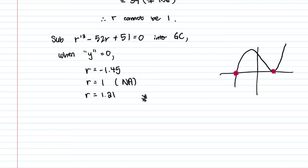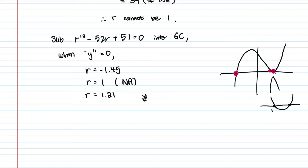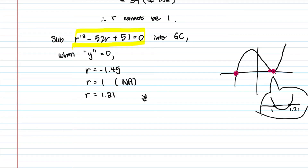The reason r=1 still appears is because it is a root, but the question states it does not exist as a valid ratio, so we reject it. If you zoom in on the curve near r=1, you can actually see two roots close together — one at r=1 and one at r≈1.21. When you press this into your GC you can see it very clearly.